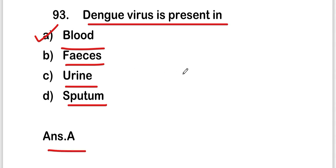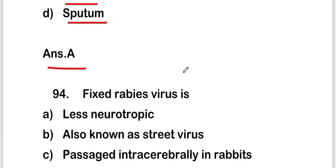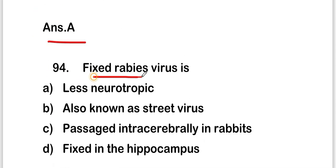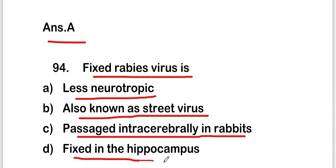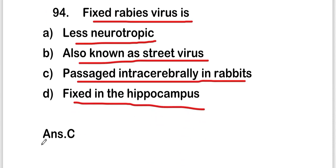The next question is: fixed rabies virus is less neurotropic, also known as street virus, passaged intracerebrally in rabbits, or fixed in hippocampus? The right answer is option C — fixed rabies virus is passaged intracerebrally in rabbits.